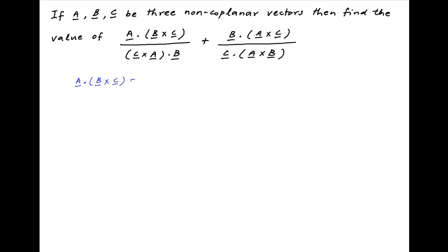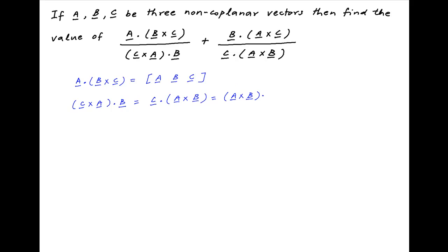A·B×C is equal to the scalar triple product [ABC]. C×A·B can also be written as C·A×B. Since scalar dot product is commutative, this can be written as A×B·C, which can also be written as A·B×C, which is equal to the scalar triple product [ABC].